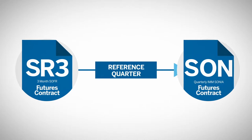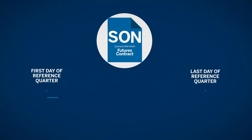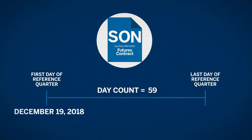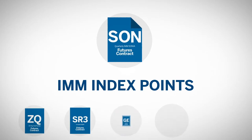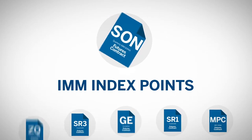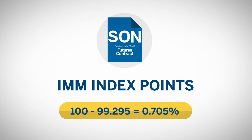The IMM SONIA contract's reference quarter is the same as the 3-month SOFR contract. For example, a December 2018 listed SONIA contract begins its interest rate reference point the 3rd Wednesday of December 2018, extending to the Tuesday prior to the 3rd Wednesday of March 2019. Just like 3-month SOFR futures, the IMM SONIA Futures will trade in IMM index points. For example, a quoted price on a December 2018 IMM SONIA Futures contract at 99.295 equates to a 0.705% yield in equivalent SONIA rate.